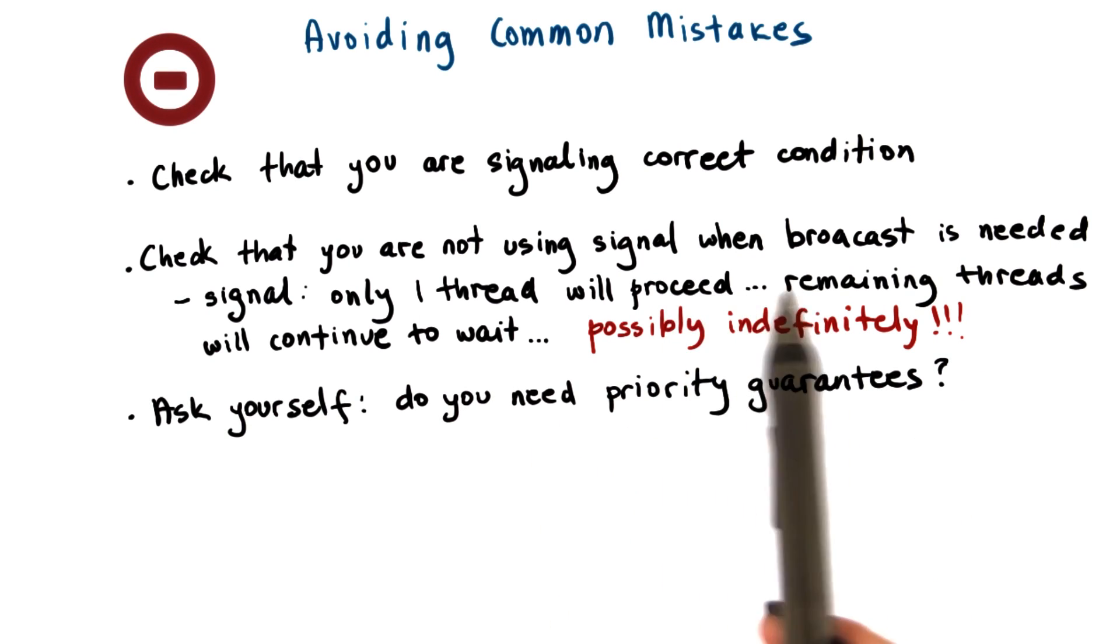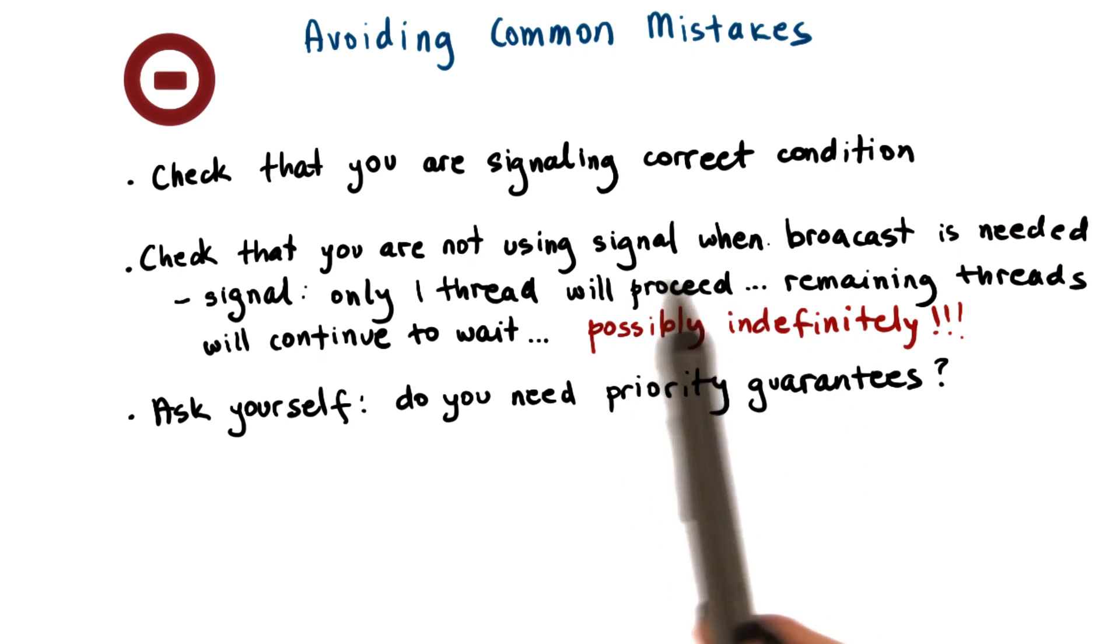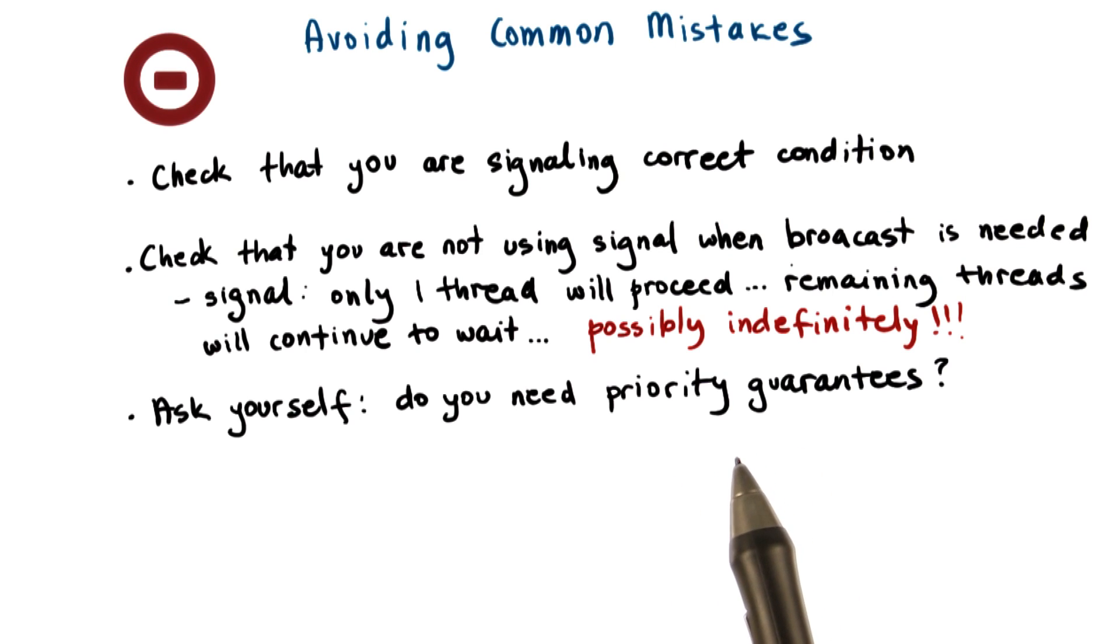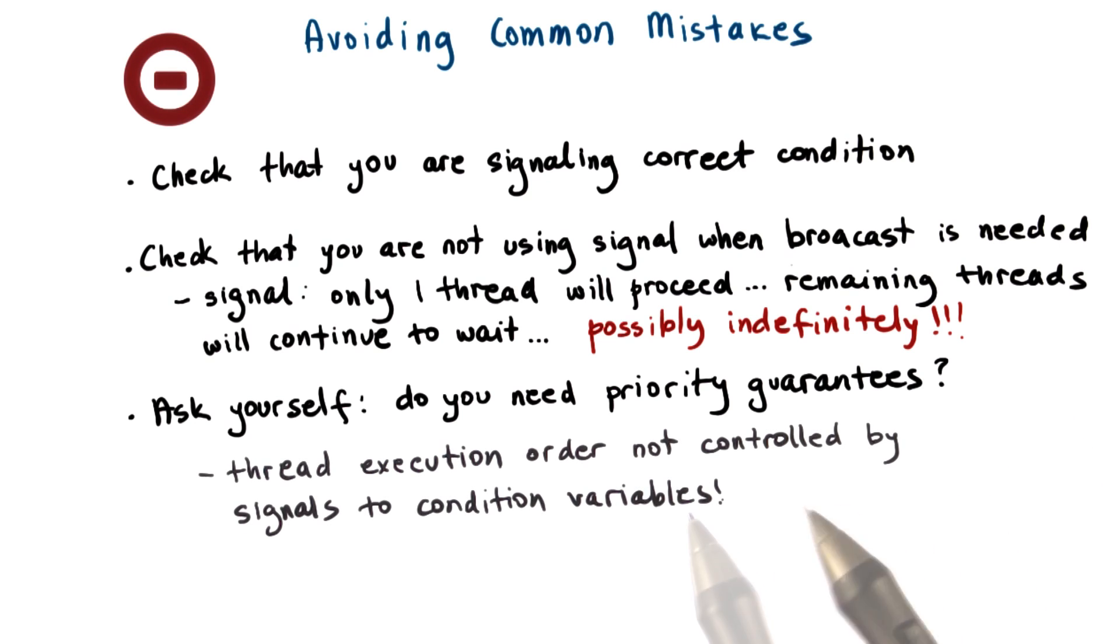You also have to remember that the use of signal or broadcast, rather the ordering of signal or broadcast doesn't do anything about making any kind of priority guarantees as far as which one of the threads will execute next. As we explained in the previous example, the execution of the threads is not directly controlled by the order in which we issue signals to condition variables.